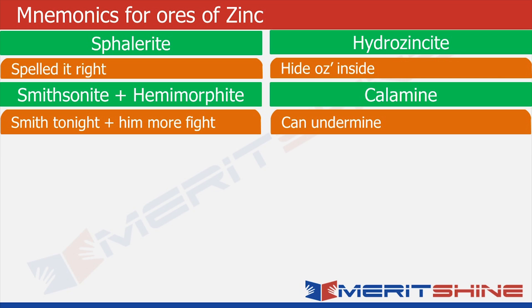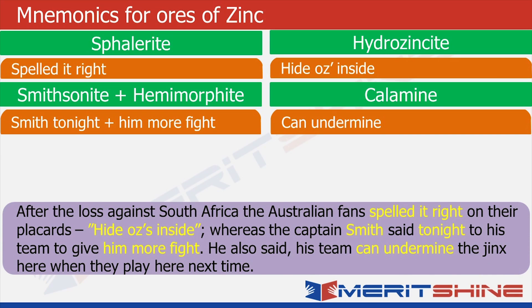In the recently concluded one-day series between Australia and South Africa, South Africans hammered Australians badly — a whitewash 5-0, perhaps the most humiliating defeat Australians have ever faced in one-day history. After the series loss the Australian fans are very angry, holding a placard on which they have spelled it right. They say 'hide Aussies inside,' ridiculing their own team for losing so badly.